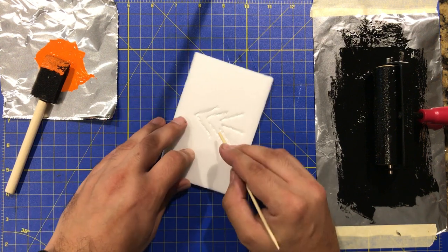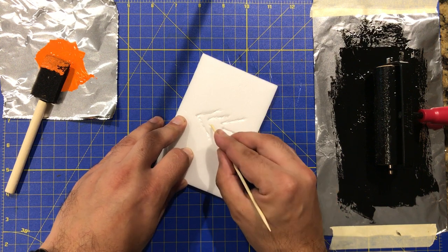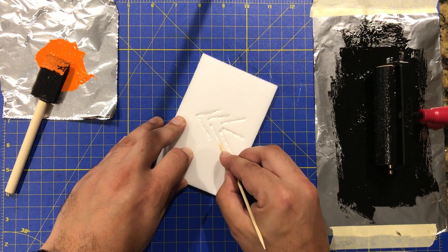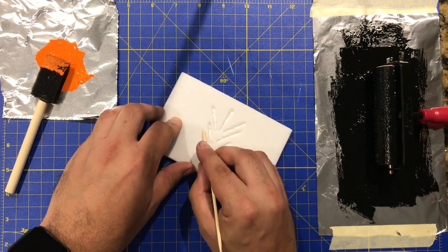Flip it over. Do the other side. That way we got a nice clean line. If you want it to trail off, you don't have to do this. I just like hard edges on the end.